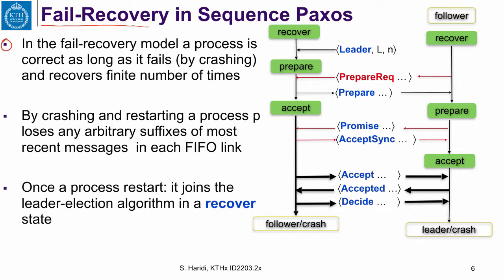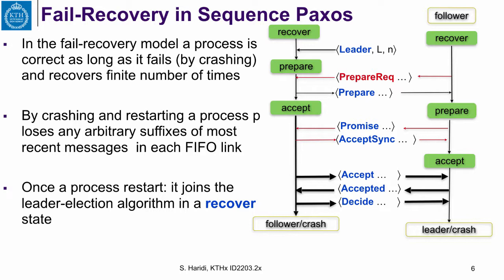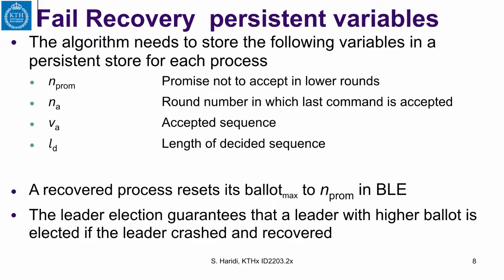We now look at the fail-recovery model of sequence Paxos. In the fair recovery model, a process is correct as long as it fails by crashing and recovers a finite number of times. By crashing and restarting, a process loses an arbitrary suffix of most recent messages in each FIFO link, so it has to restart a new FIFO link. Once a process restarts, it joins the leader election algorithm in a recover state. This is an example where a process recovers and becomes a leader, and another where it becomes a follower.